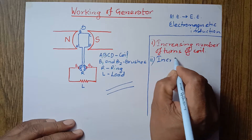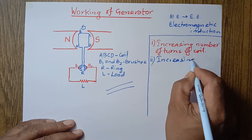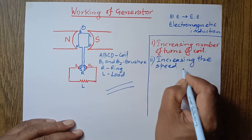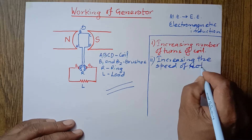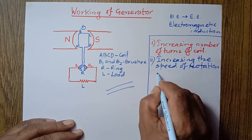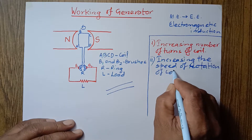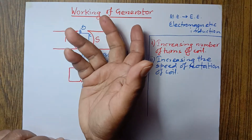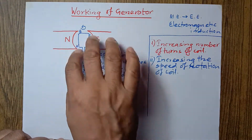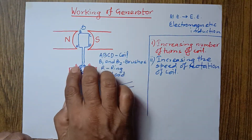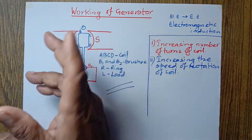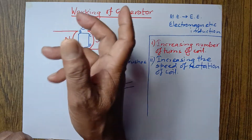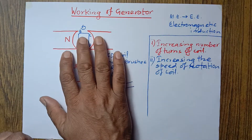The second method is increasing the speed of rotation — the speed of rotation of the coil. As I told you in the previous class, when the coil is rotated, the coil rotates along with the ring. Both the ring and coil rotate, but the brushes remain in their position. If this rotation is increased — instead of 10 times a second, if it rotates 50 times a second — then the amount of current and electrical energy will be more.